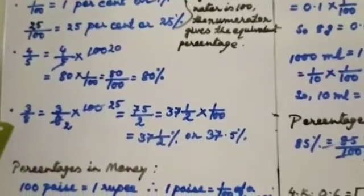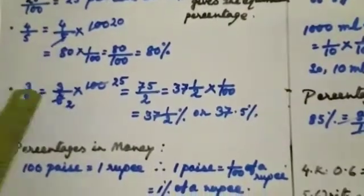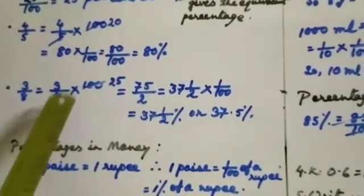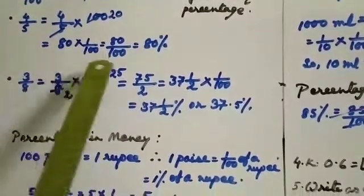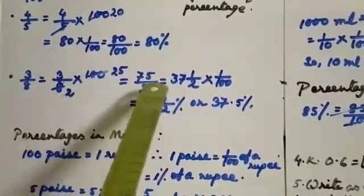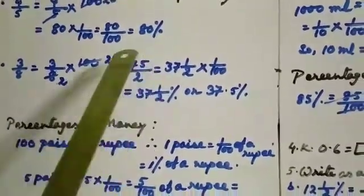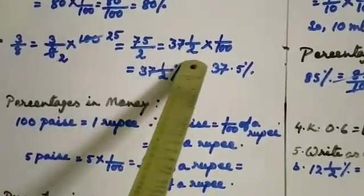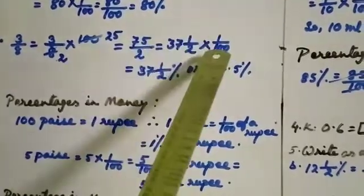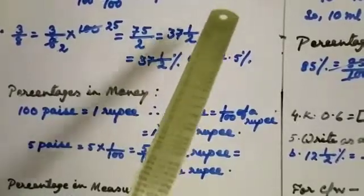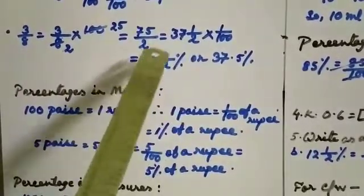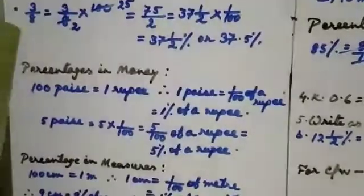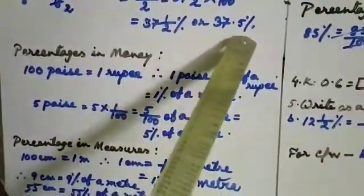Now another fraction: 3 by 8, convert it into percentage. So 3 by 8 multiplied by 100. Cross multiply — 4 into 25 gives 100, and 25 times 3 gives 75 by 2. This improper fraction changes into a mixed fraction: 37 and 1 by 2. To show it as a percentage, multiply by 1 by 100, giving 37 and 1 by 2 percent, or 37.5 percent, since 1 by 2 means 0.5.